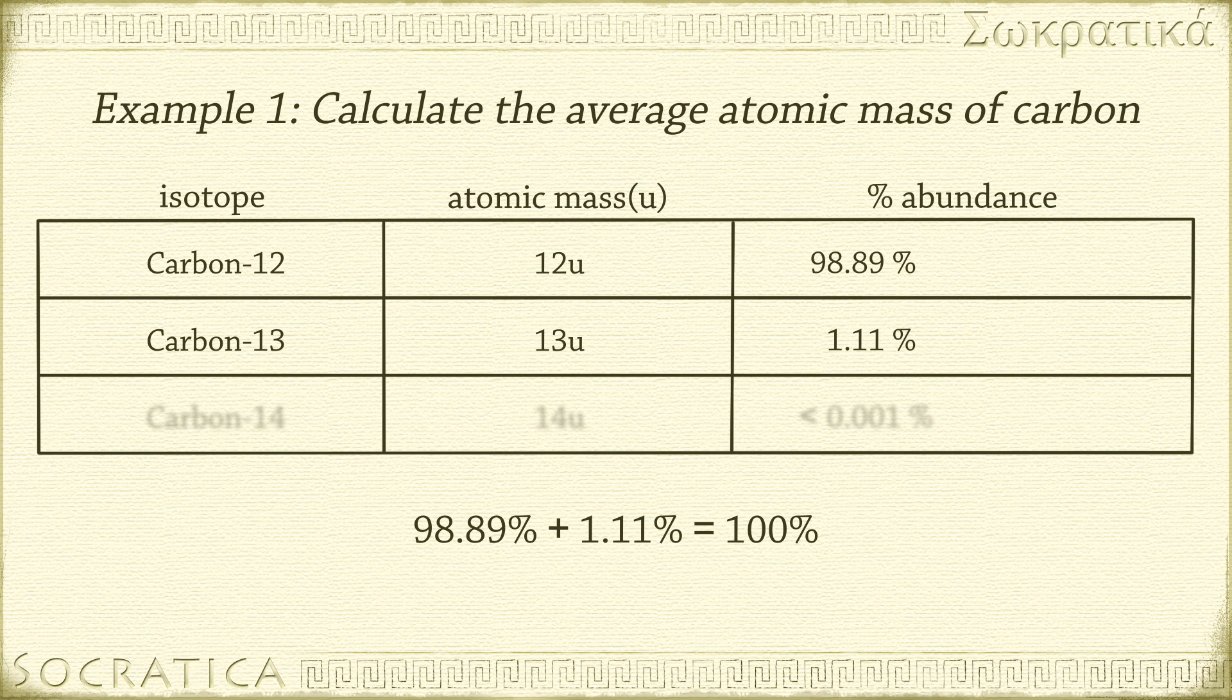notice that the percentages of carbon-12 and carbon-13 add to 100%, so we know we're okay disregarding the very small percentage of carbon-14. Let's change the percent abundances to decimal fractions by dividing by 100%. 98.89% becomes 0.9889, and 1.11% becomes 0.0111. Check your answer.